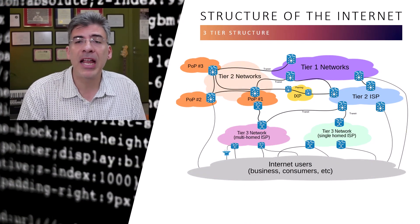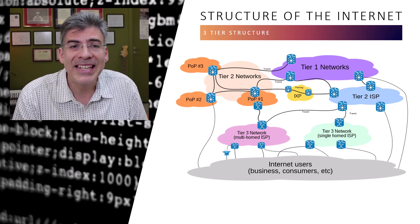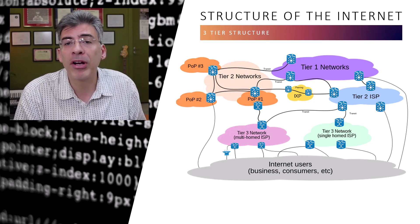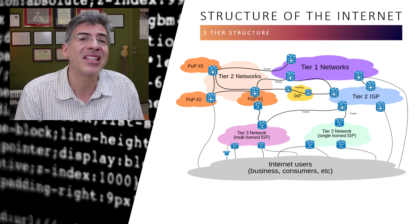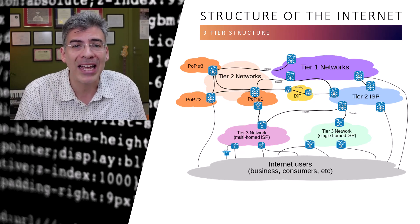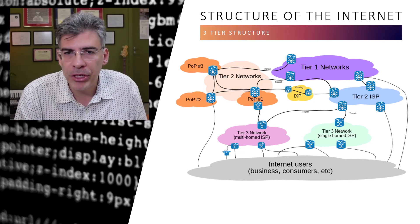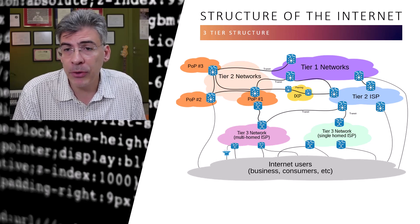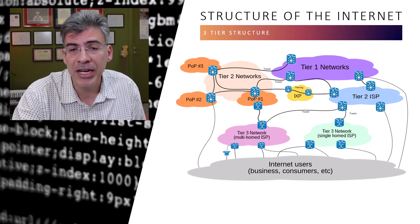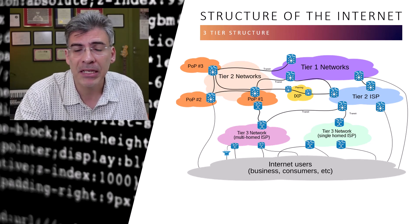BGP routes traffic on the internet. The internet is essentially an inter-network of networks. These networks are owned and operated by organizations known as internet service providers or ISPs. These ISPs operate at different levels. Here we see a high-level diagram of the structure of the internet with tier 1, tier 2, and tier 3 ISPs.